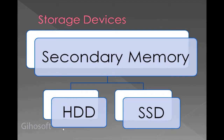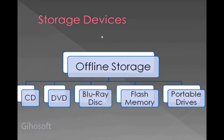When we talk about secondary memory, we only have two options: HDD (hard disk drive) and SSD (solid state drive). Offline storage has further five types: CD, DVD, Blu-ray disc, flash memory, and portable devices or portable drives such as your portable hard drive. Knowing this hierarchy first is important so that we can go ahead and discuss each type clearly.